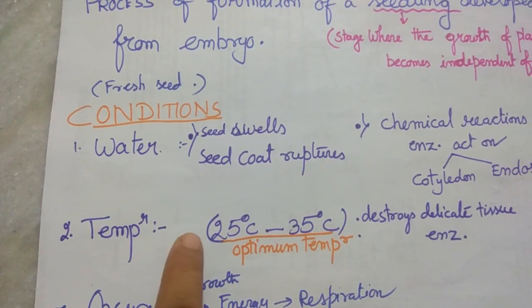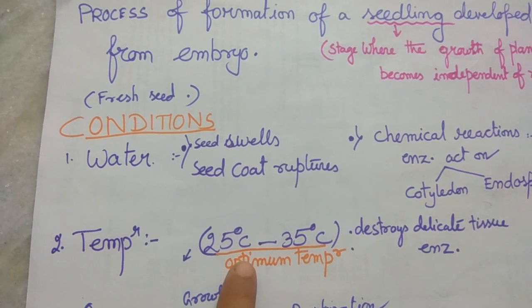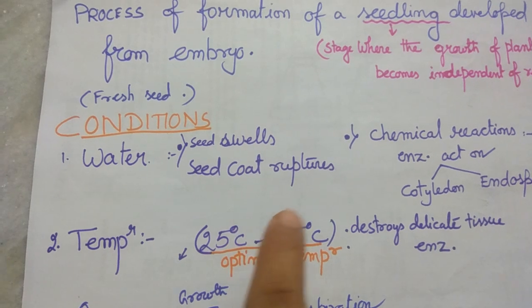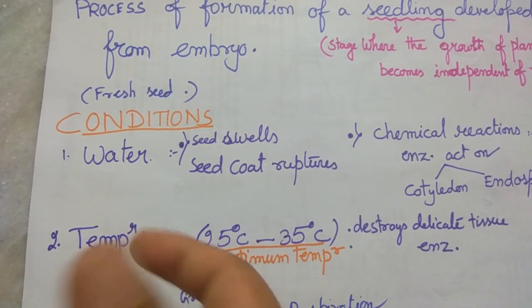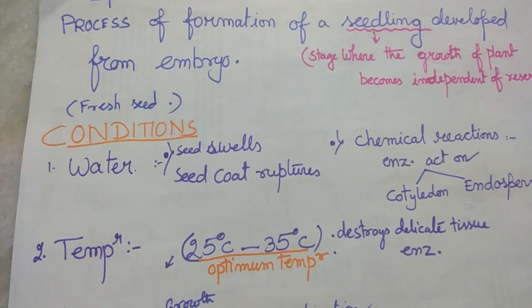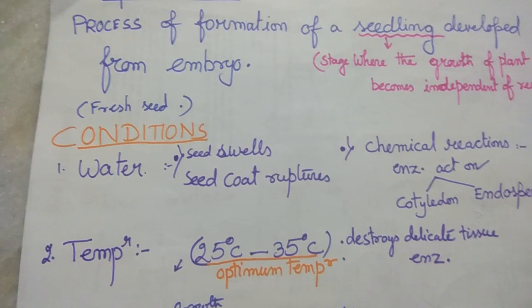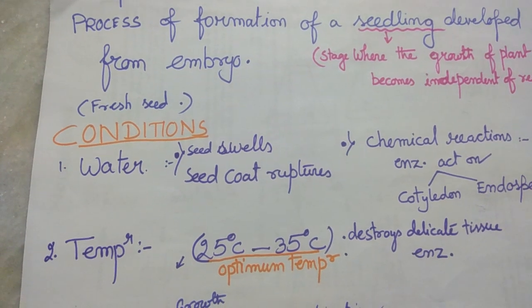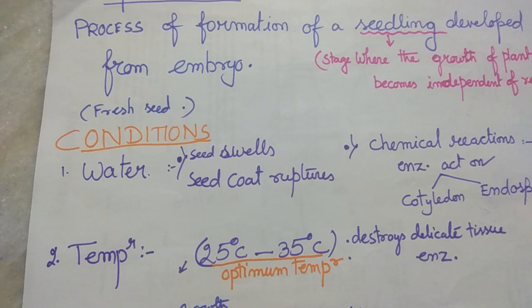The next condition is temperature. The temperature range in which the seed can germinate is 25°C to 35°C — this is called the optimum temperature. Below 25°C the seed will remain dormant as no activity will occur. Just above 35°C the temperature is too high and may destroy the delicate tissues of the embryo. Also, enzymes are made up of protein and at high temperature they will degenerate.